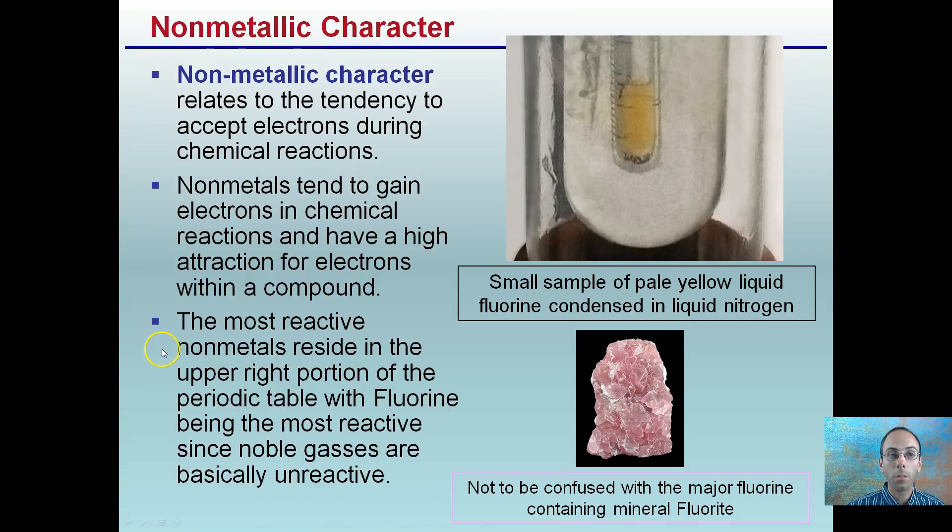Non-metallic character relates to the tendency to accept electrons during chemical reactions, kind of the opposite of what we just discussed. Non-metals tend to gain electrons in chemical reactions and have a high attraction for electrons within a compound. The most reactive non-metals reside in the upper right-hand portion of the periodic table, fluorine being the most reactive, since noble gases are basically unreactive. So we're looking at trends. Noble gases are unreactive. We want to look at fluorine being the most reactive with the non-metallic character.